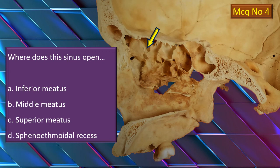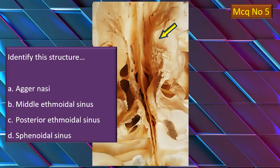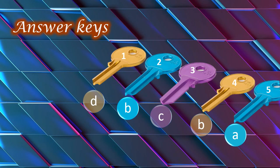Last MCQ: an area, swelling, or landmark is being pointed out by the arrow. This is the ethmoidal bone section — we are seeing it from below upwards. That's the clue. Think and give your answer. Those are the answer keys.